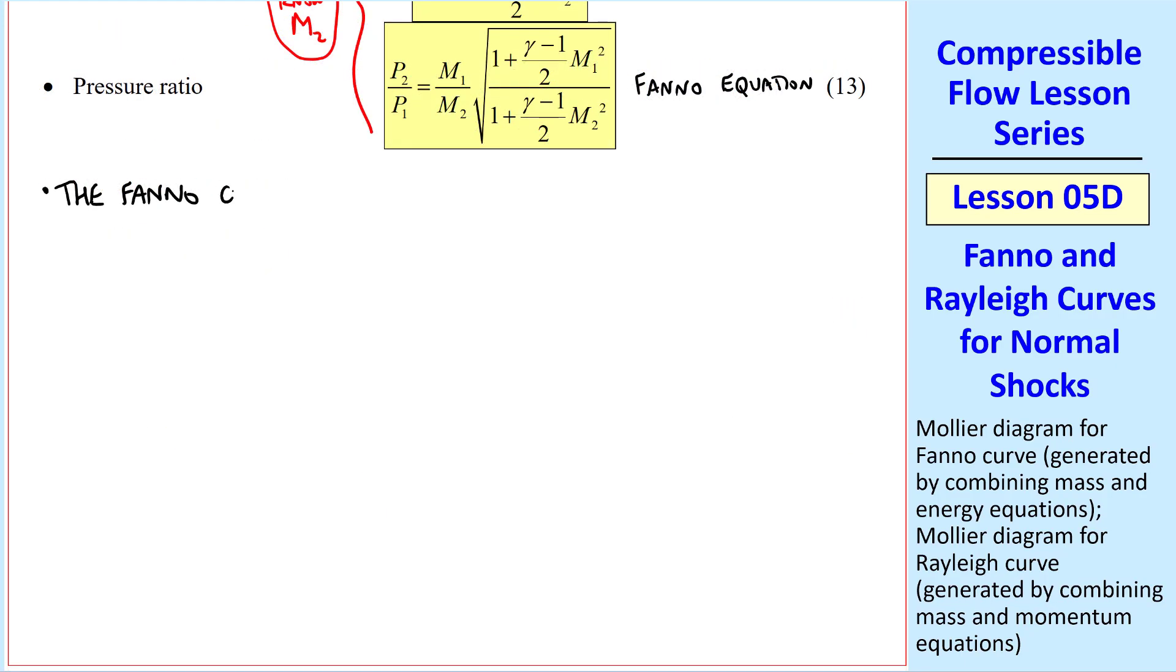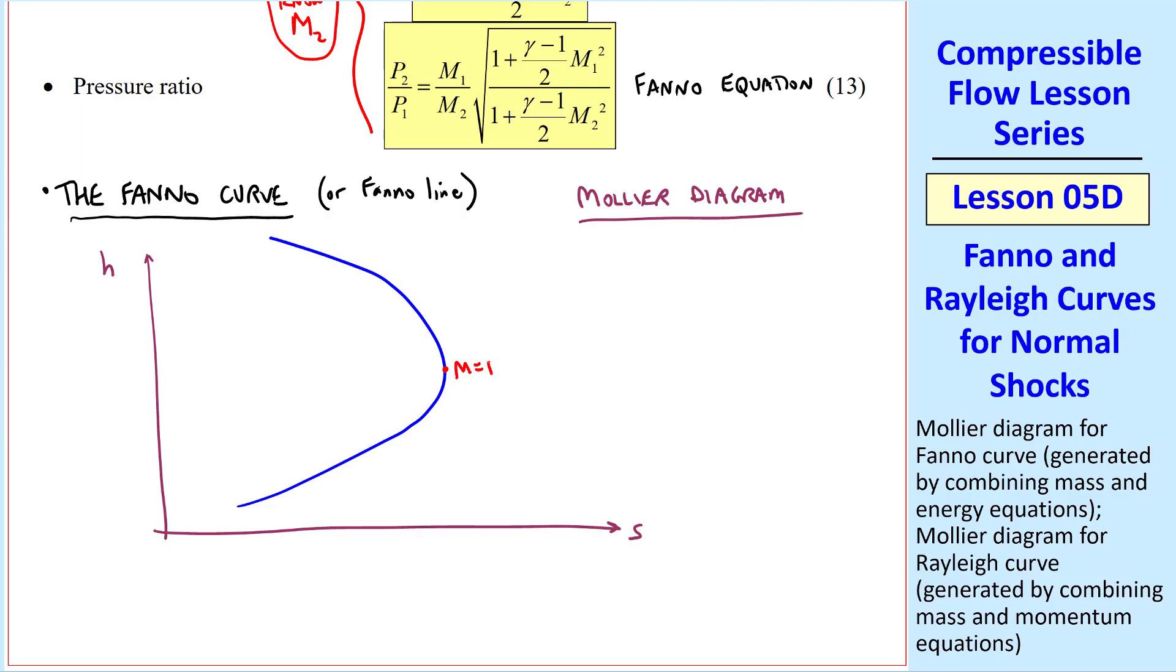First I'll talk about the Fanno curve, which some textbooks call the Fanno line, but I prefer the word curve since it's not a line. This Fanno curve is very interesting in itself. We typically plot it as a Mollier diagram with specific enthalpy as a function of specific entropy. The Fanno curve looks something like this. The point to the far right is the sonic point where Mach number is 1. The upper branch is the subsonic branch, and the lower branch is the supersonic branch.